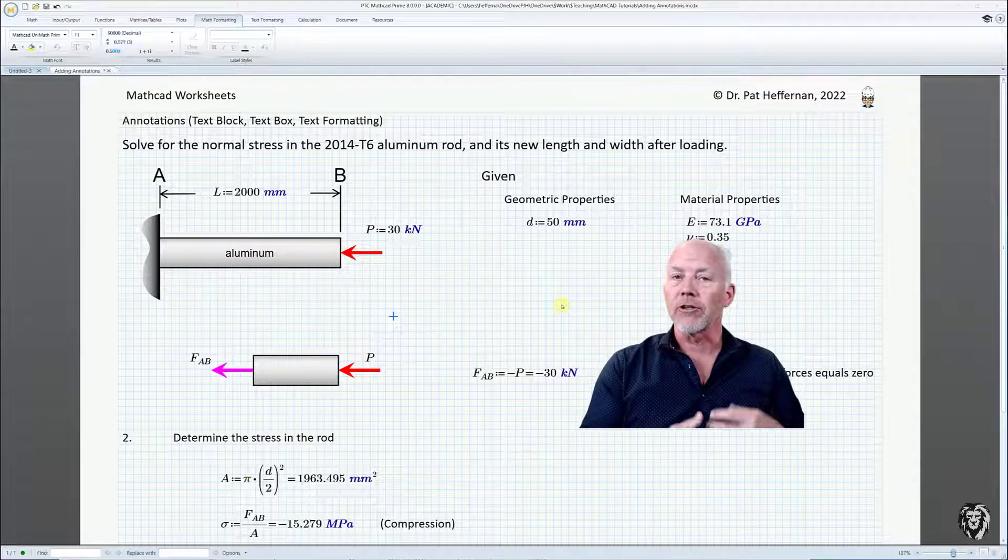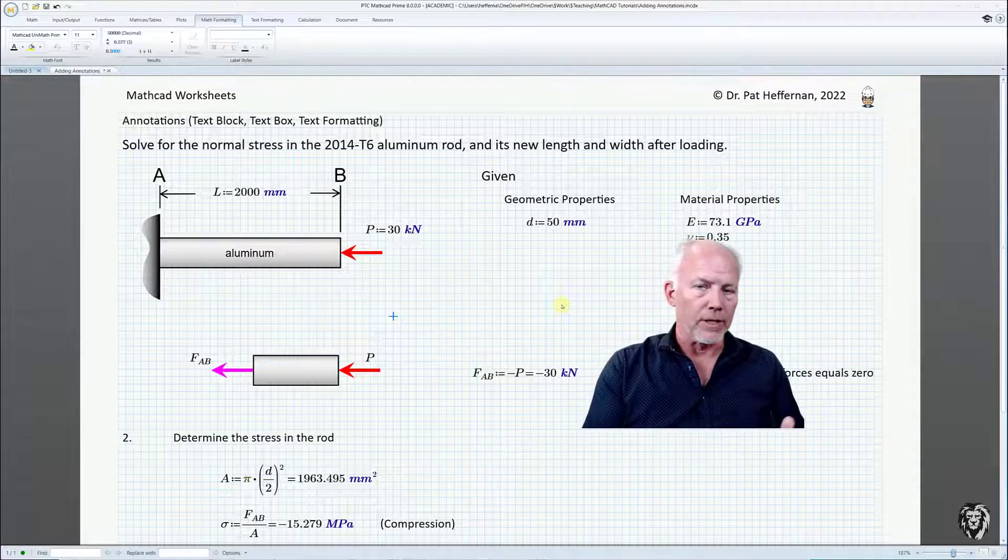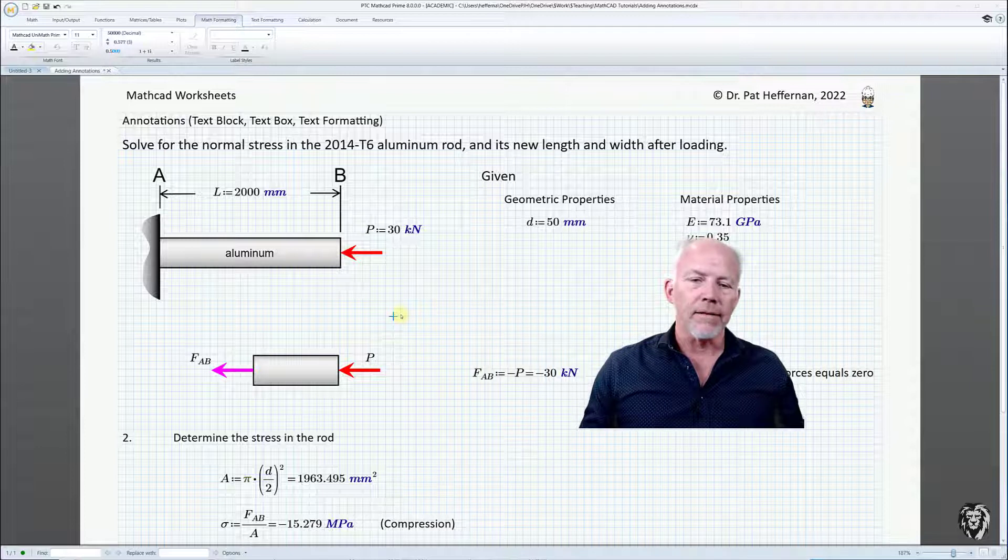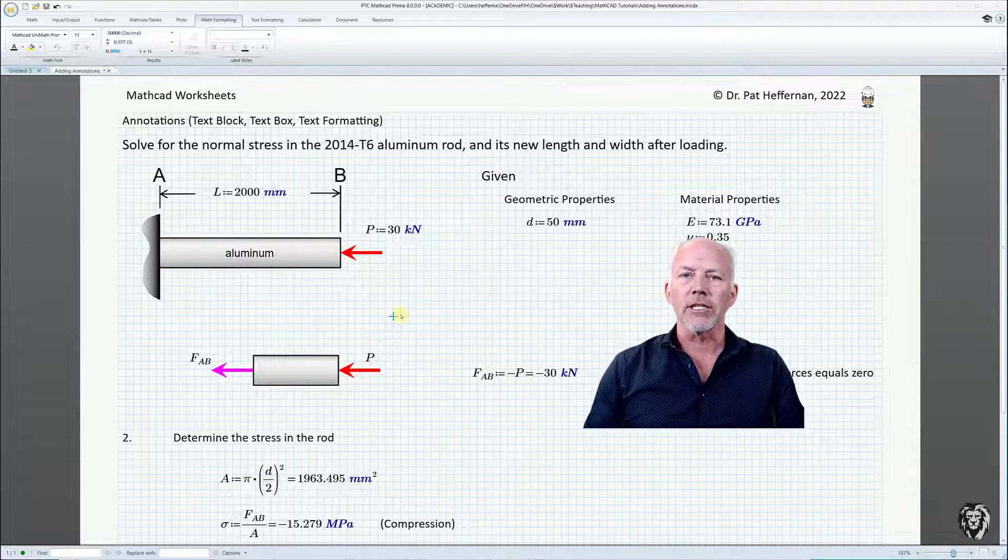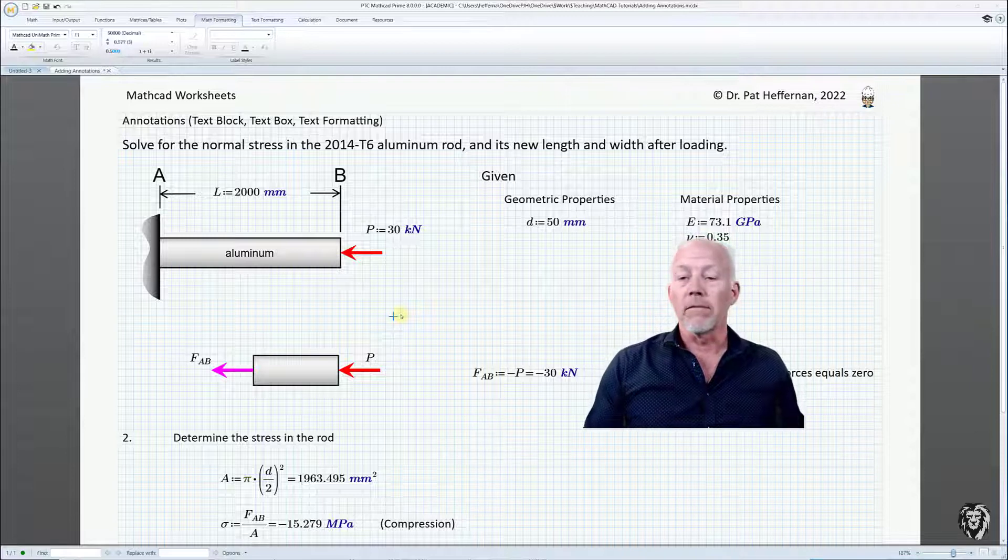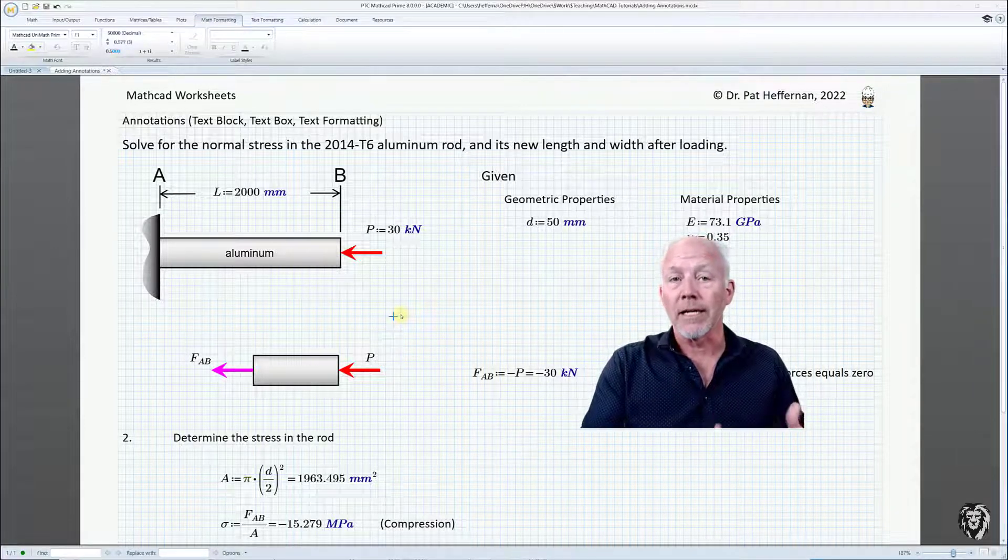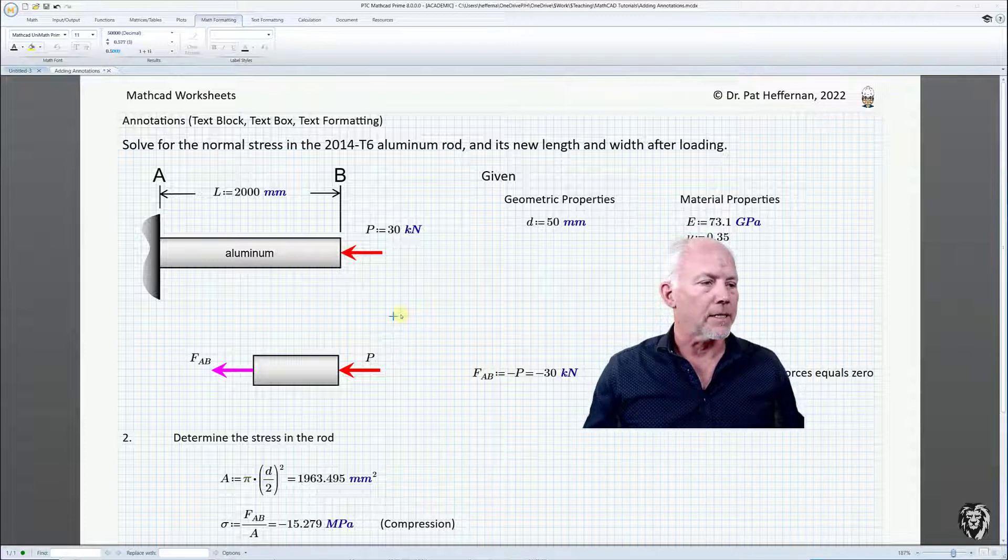So if you inherit a spreadsheet from somebody else or you go back to a spreadsheet that's a few years old, quite often it's almost impossible to figure out what's going on. So the beauty of MathCad is that this looks a lot like our hand calculations and if we add adequate annotations as we're going through then we're able to easily discern what is being done and how it's being done, why it's being done.